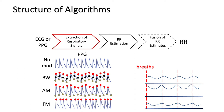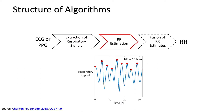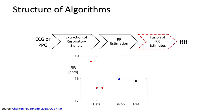Having obtained these surrogate respiratory signals, we move to the second step, which is to estimate the respiratory rate from them. We can simply assume that there's one peak per breath. So by counting the number of peaks, we can calculate the respiratory rate, here as 17 breaths per minute. An optional step is to fuse respiratory rate estimates obtained from the different modulations. In this example, there are three estimates in red from the three modulations, fused by finding the average, which gives a closer value to the reference than any of the individual estimates.